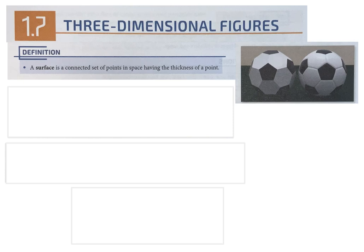A surface is a connected set of points in space having the thickness of a point. They give the example here of a soccer ball. The surface of the soccer ball is like the skin of a soccer ball that goes around it. With a soccer ball you actually have a little more thickness than just a point, but what they're trying to get across is the area that connects all the space in between the edges.